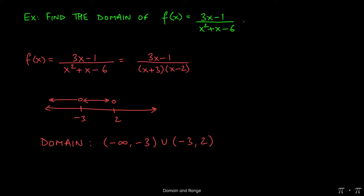And then lastly, we pick a number to the right of 2, say 3. 3 plus 3 is definitely not zero, 3 minus 2 is 1, not zero either. So that means all the numbers to the right of 2 can be plugged into this function as well, and they'll give us an appropriate y value.